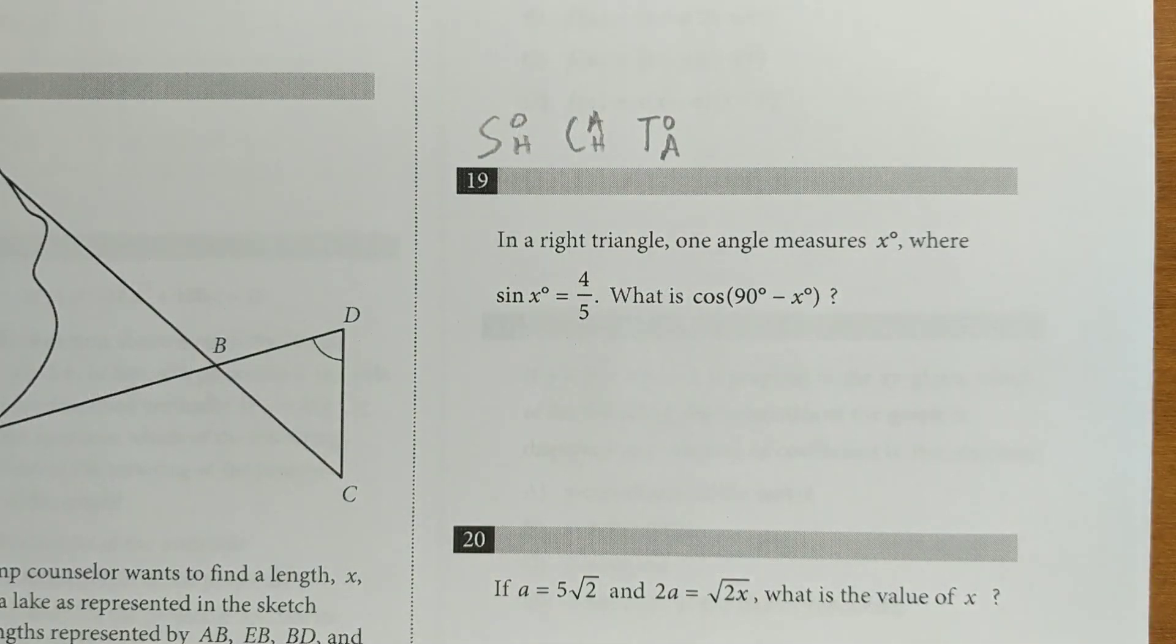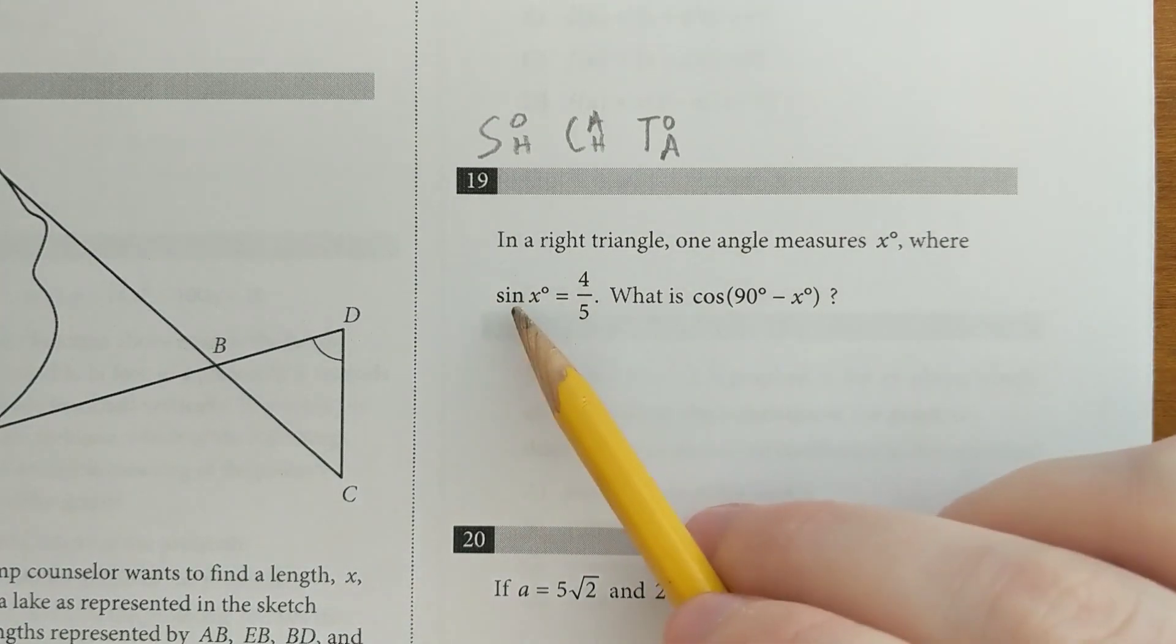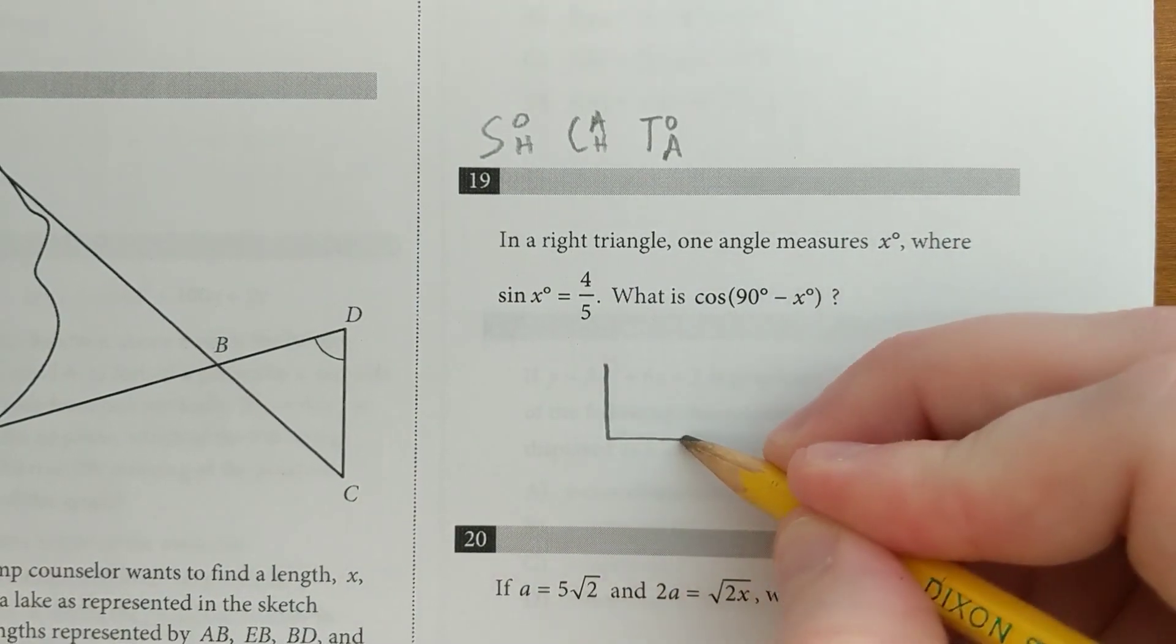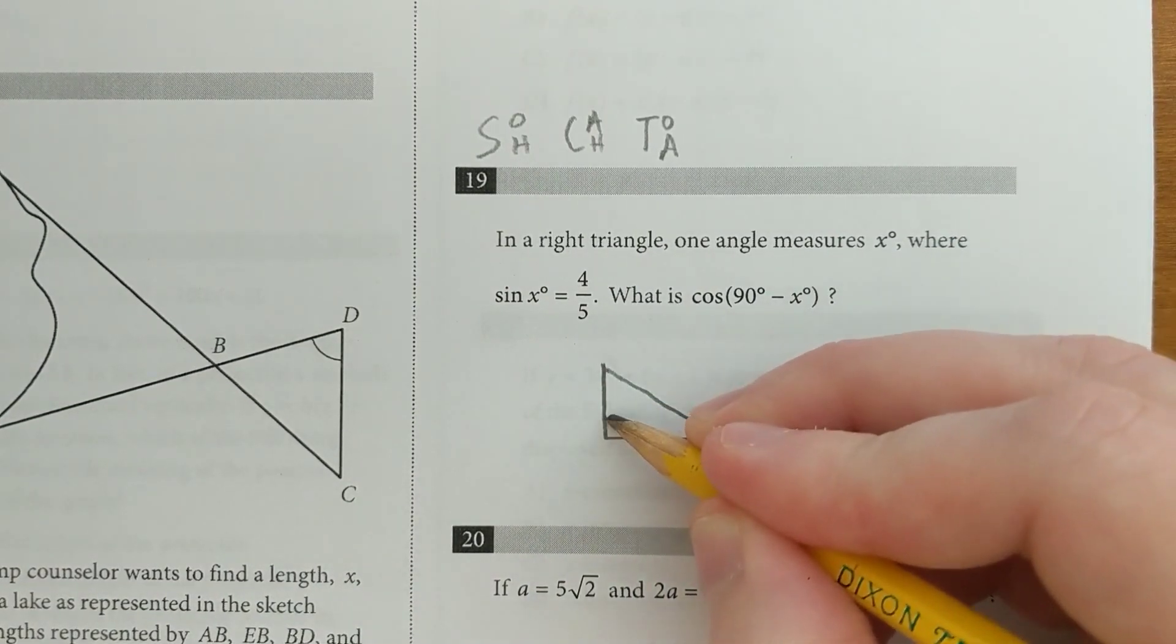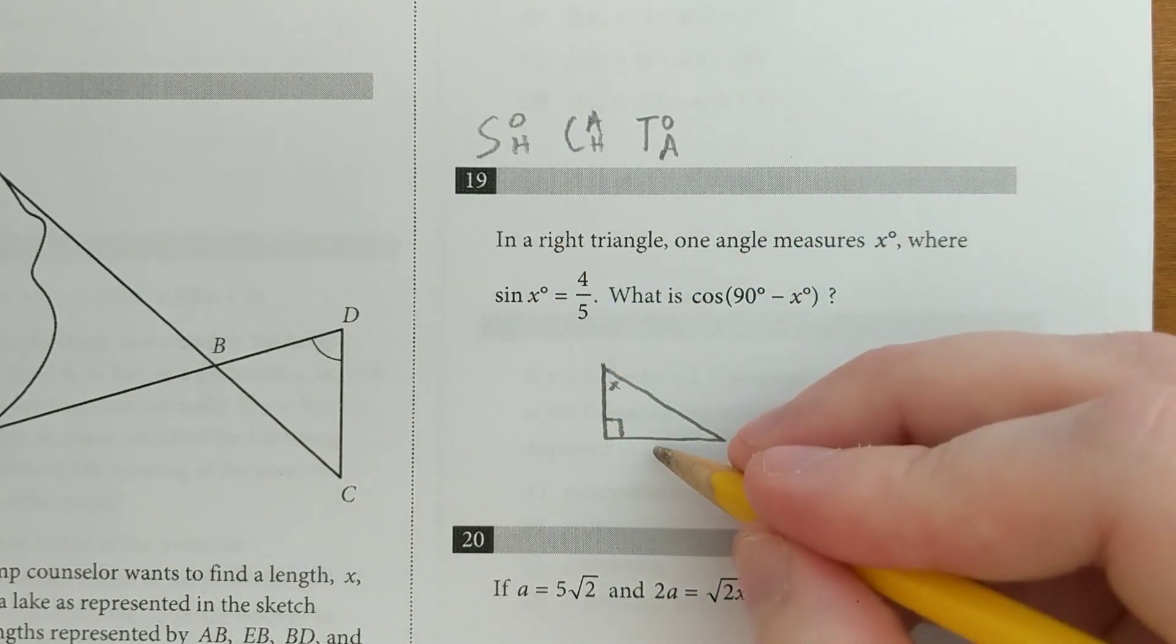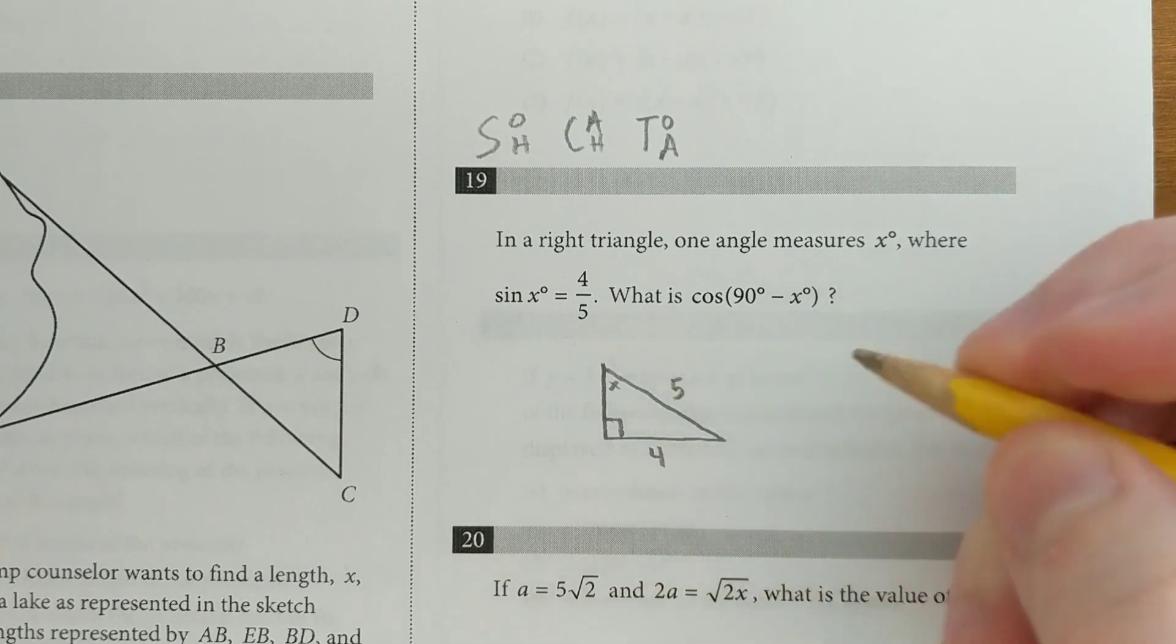Now, this question looks different, but it's based on the same principle we just saw in the last question. They tell us that the sine of x is 4 over 5, and they want to know the cosine of 90 minus x. I'm just going to draw a triangle to get a sense for what's going on here. So let's say this is x. Sine is opposite over hypotenuse, so this would be 4, this would be 5.